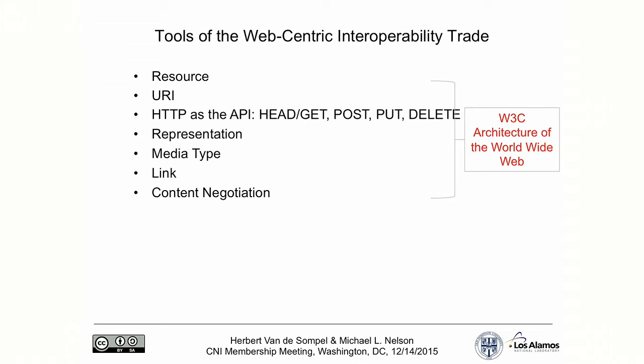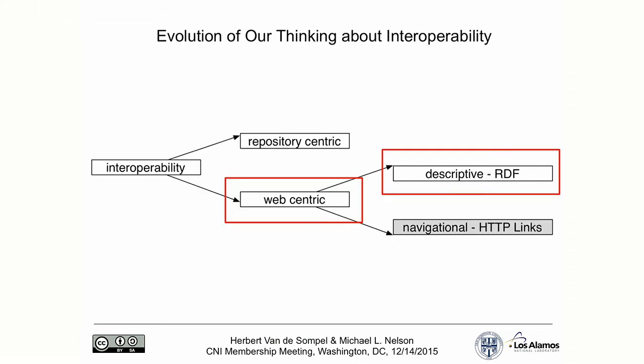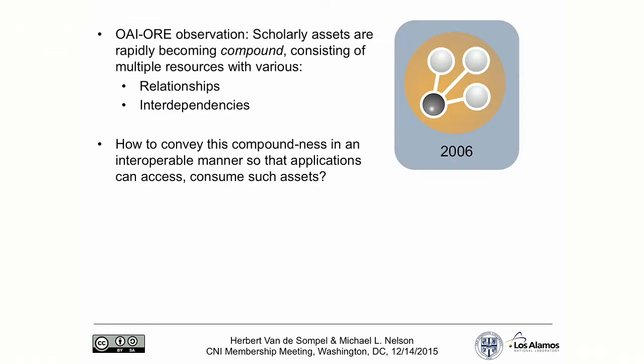Any interoperability problem you're going to solve should purely use the fundamental primitives of the web: the resource, the URI, HTTP as the API — using HEAD, GET, POST, PUT, DELETE — the notion of representation, media type, link, and content negotiation. These are the tools. Both ORE and Memento used these with a small add-on to define interoperability for non-trivial problems. But the core is that you need to put yourself on the web rather than in the repository.